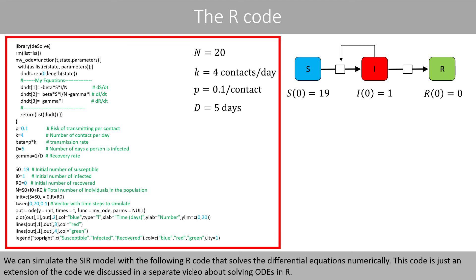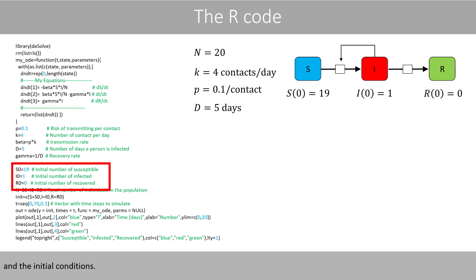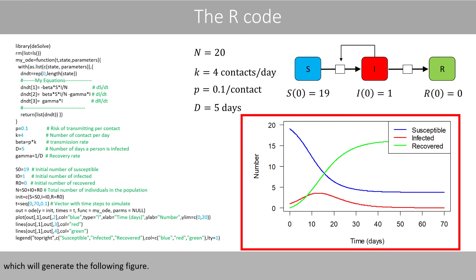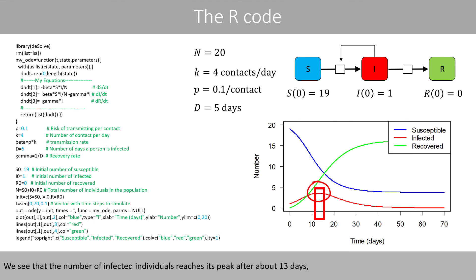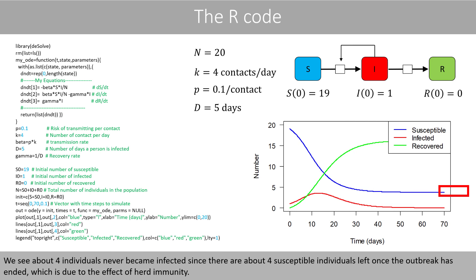We can simulate the SIR model with R code that solves the differential equations numerically. This code is an extension of code discussed in a separate video about solving ordinary differential equations in R. We define our equations, the parameter values, and the initial conditions, then solve the differential equations and plot the output, which generates the following figure. We see that the number of infected individuals reaches its peak after about 13 days, and the system reaches a steady state after about 70 days, where almost no individuals are infected. About four individuals never became infected, since there are about four susceptible individuals left once the outbreak has ended, which is due to the effect of herd immunity.